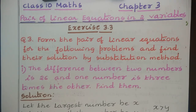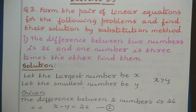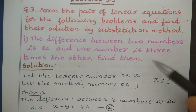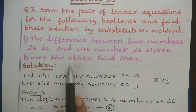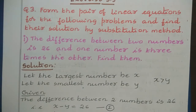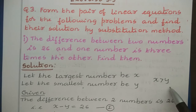In this question there are six sub-questions. Sub-question 1: the difference between two numbers is 26 and one number is three times the other. Find them. So here we need to find the numbers. The difference between two numbers is 26 and one number is three times the other. So let us take the largest number as x and the smallest number as y, where x is greater than y. We need to find the exact value of x and y.